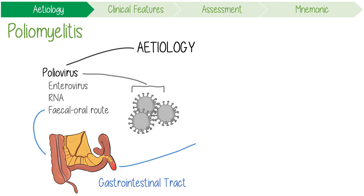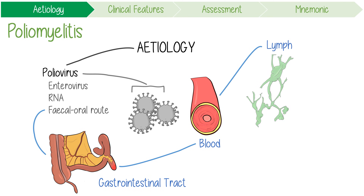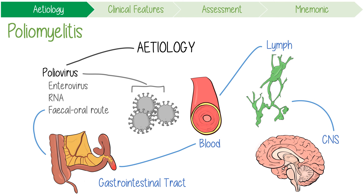From the gastrointestinal tract, it may spread via the blood to the lymph nodes and rarely to the central nervous system, where it affects the motor neurons in the anterior horn and brain stem.